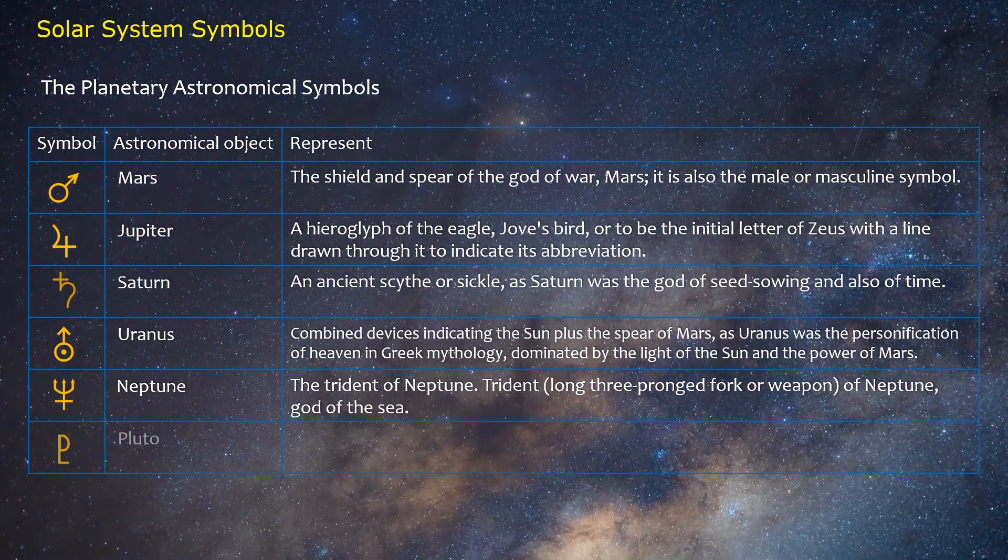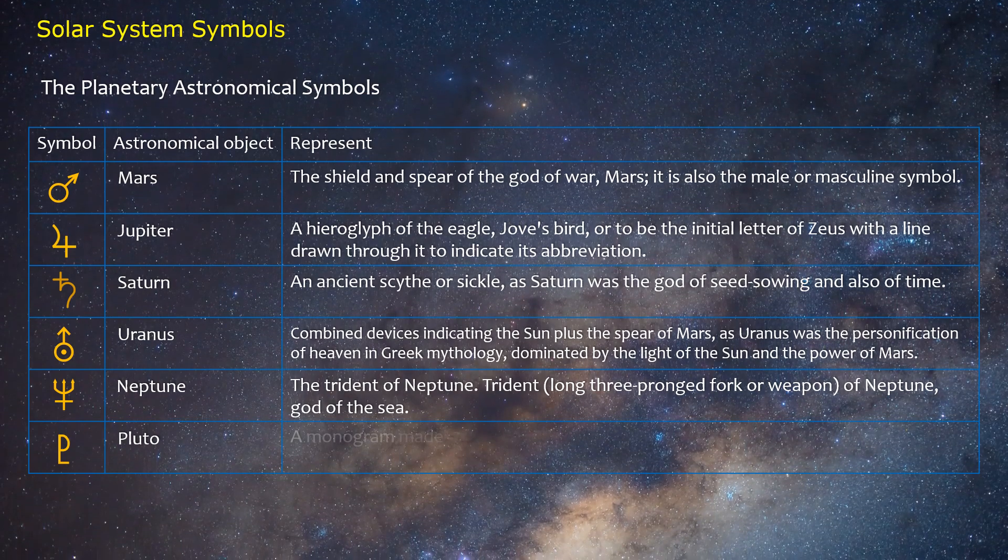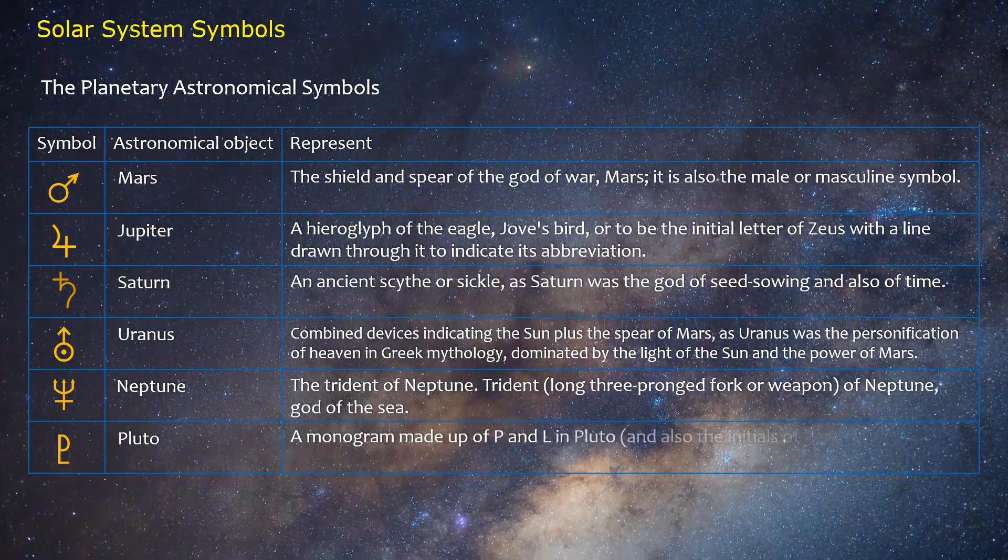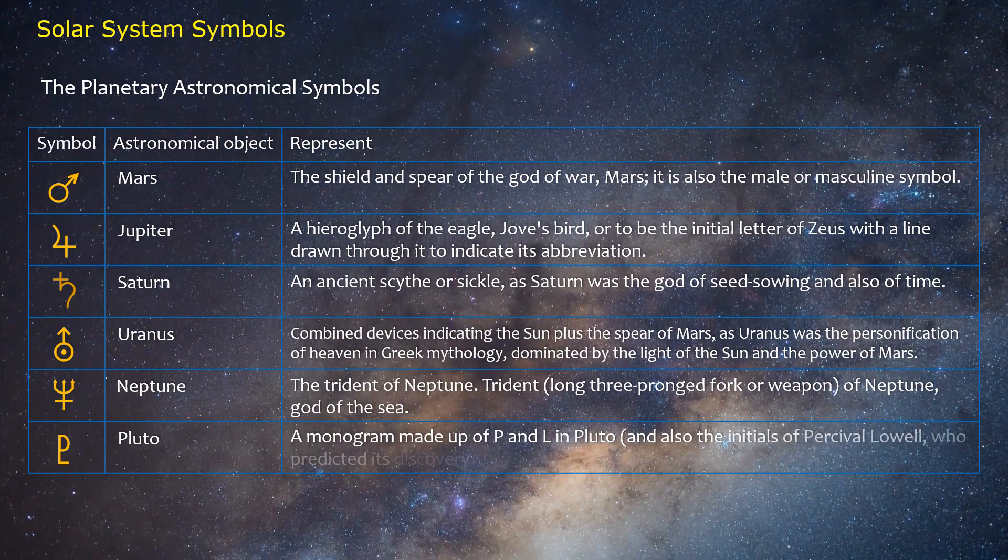Pluto: A monogram made up of P and L in Pluto, and also the initials of Percival Lowell, who predicted its discovery.